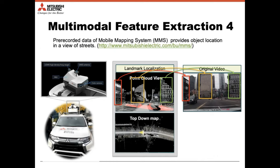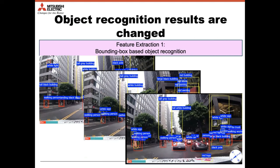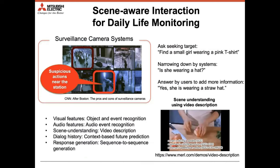We can align the point cloud view to original views and localize where buildings are. Then we can build the dialogue system on top of this information. Every frame has different bounding boxes, so we really needed to track objects — that is a huge challenge to solve. If we can solve all these technologies, we can build surveillance camera systems to recognize suspicious actions near stations, even with 2,000 cameras, and build dialogue systems for instruction videos.